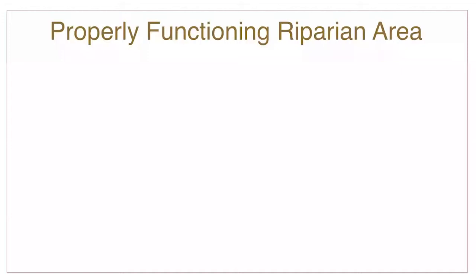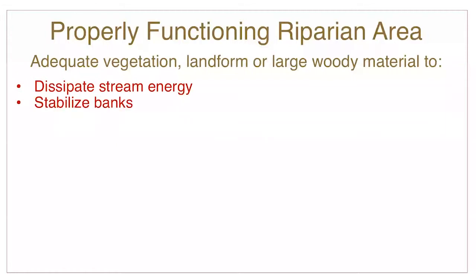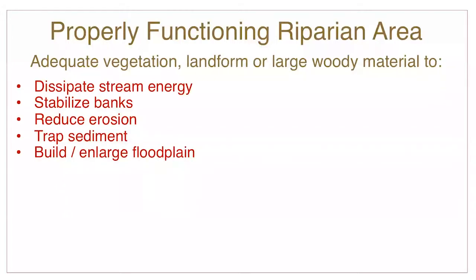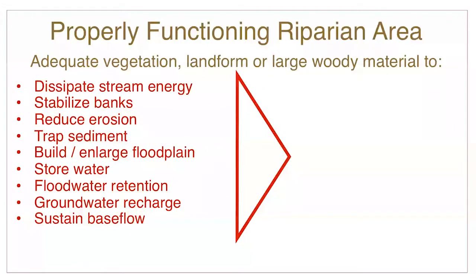It's not difficult to learn how to recognize a functioning riparian area. Look for adequate vegetation, large woody material, and landforms so that the following can occur: dissipate stream energy, stabilize the banks, reduce erosion and trap sediment, build and enlarge the floodplain, store water and retain floodwaters, recharge groundwater, and sustain flow in the creek between rains. And if these processes are working, the riparian area has physical function.